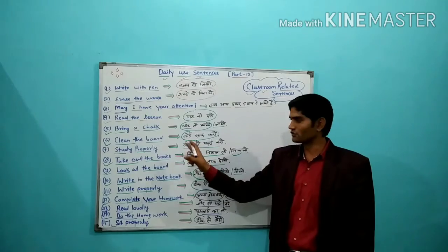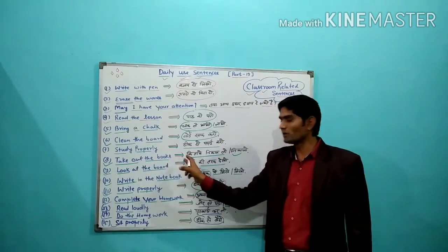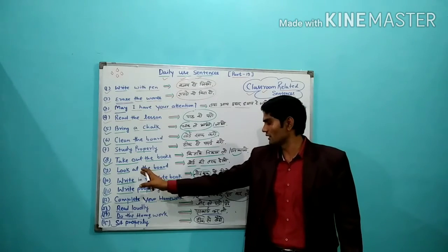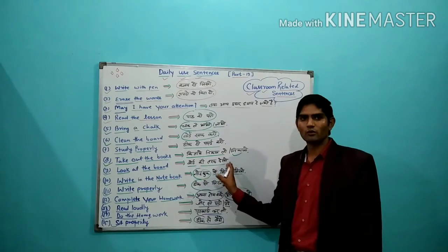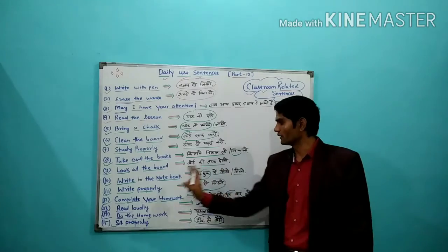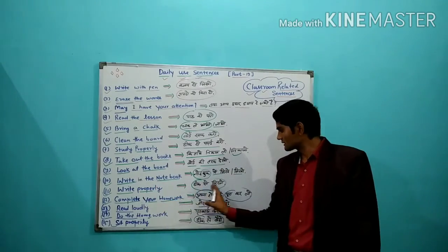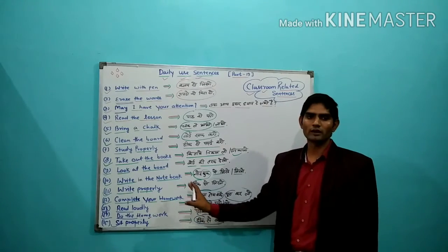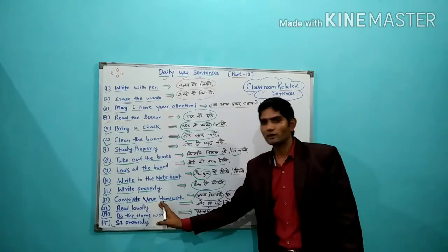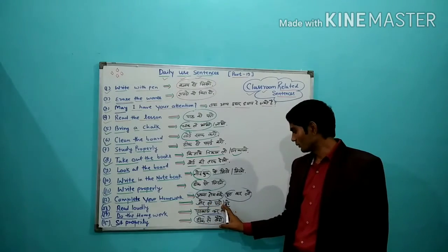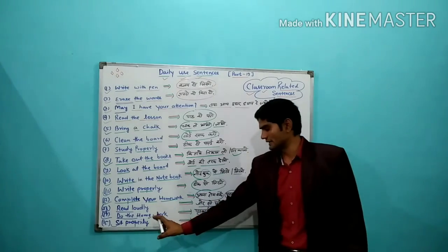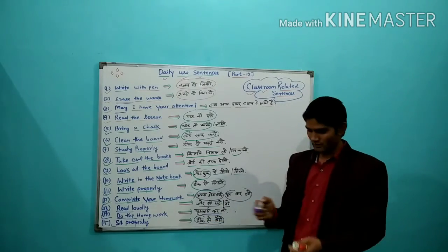Next: Study properly, ठीक से पढ़ो। Take out the books, किताबें निकालो। Look at the board, board की तरफ देखो। Write in the notebook, notebook में लिखो। Write properly, ठीक से लिखो। Complete your homework, अपना homework पूरा कर लो। Read loudly, जोर से पढ़ो। Do the homework, homework कर लो। Sit properly, ठीक से बैठो।